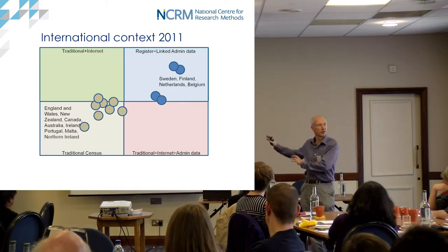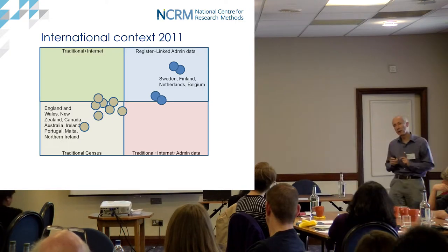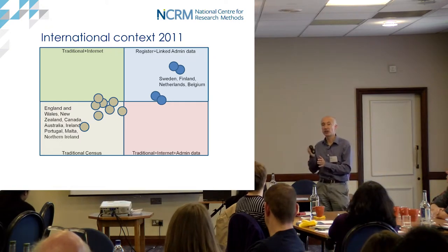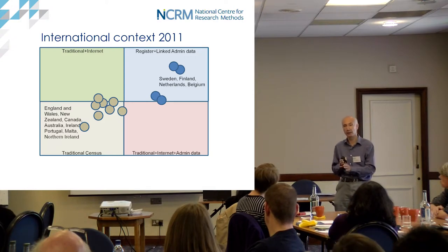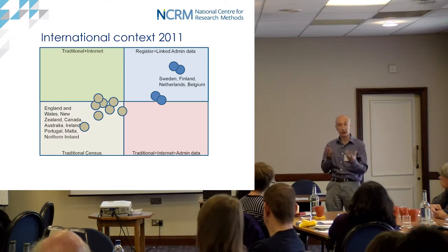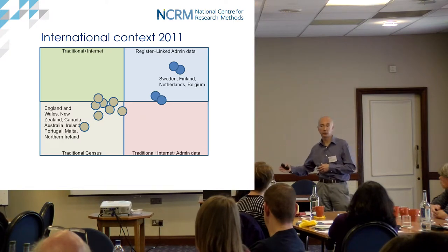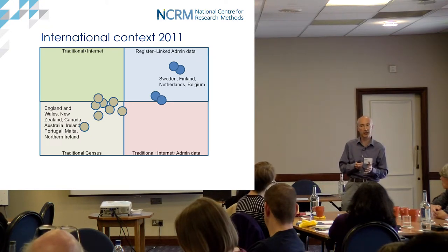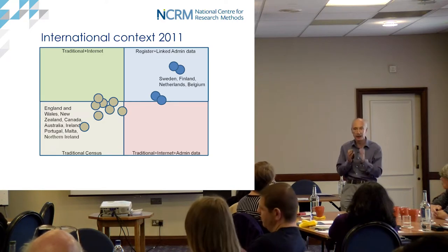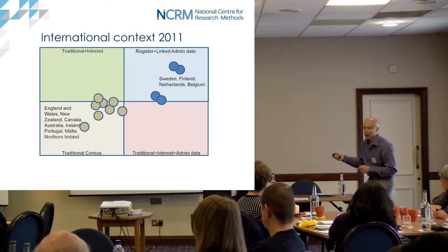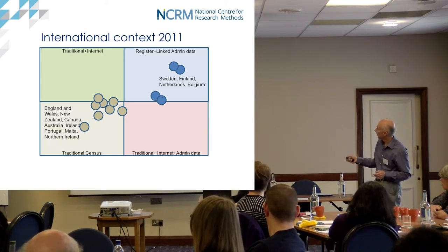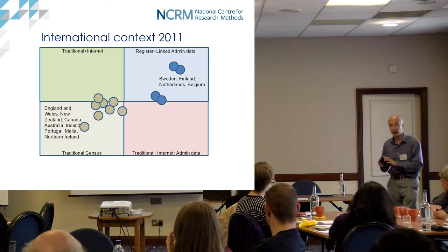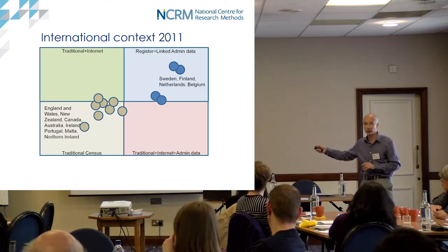Northern Ireland was the only bit of the three UK censuses where looking at linked administrative data directly changed in a processing way some of the published counts - whereas in England and Wales we did a traditional census, did a coverage survey, then looked at some administrative data as a quality check. The numbers from the administrative data in 2011 didn't directly change any of the published census data.